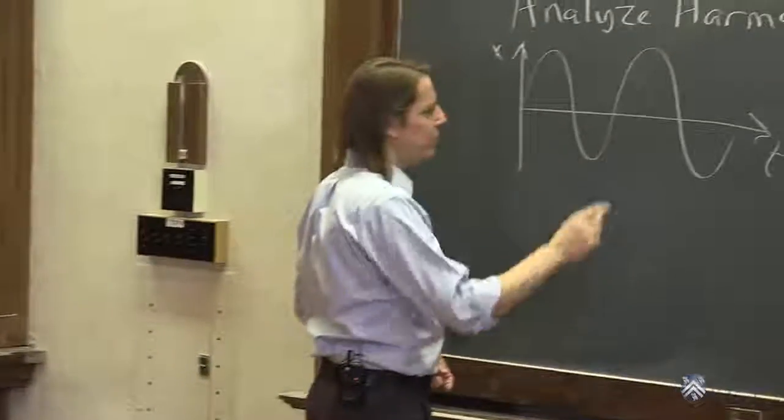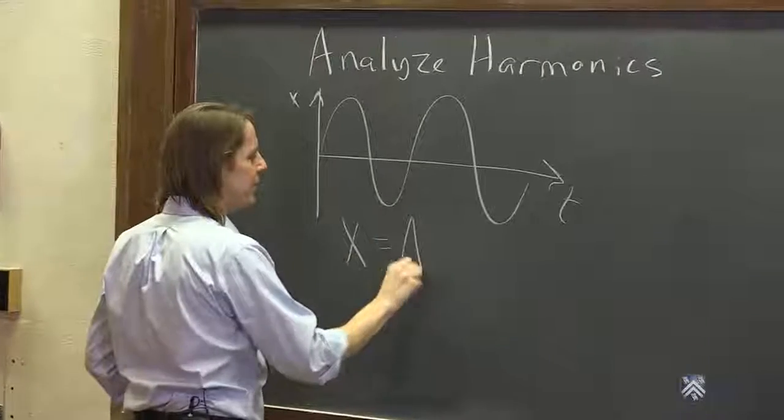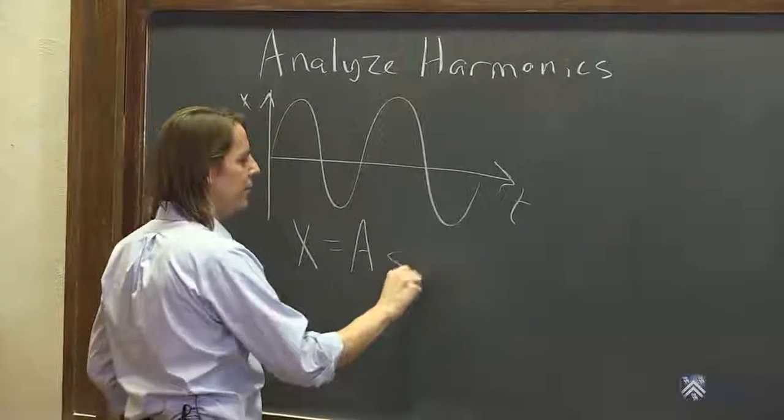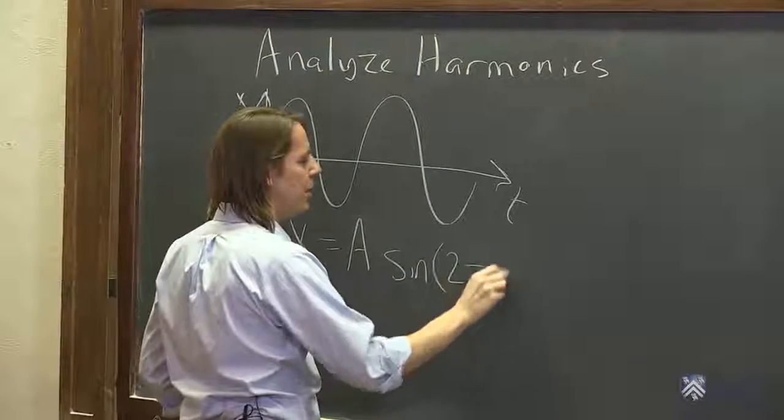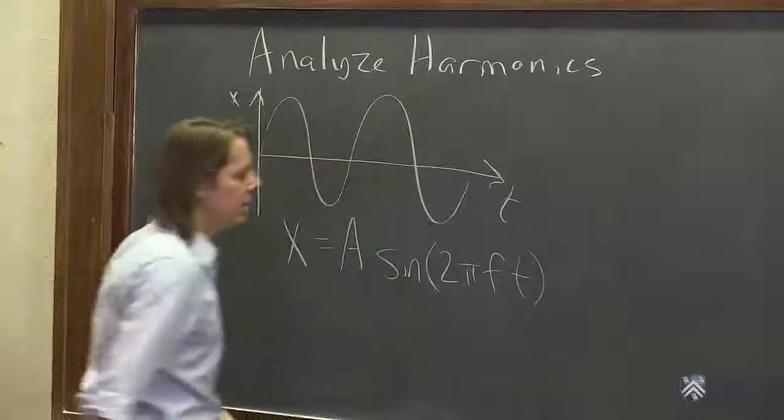The formula we used to describe this motion is x = A sin(2πft), where x is some amplitude A times sine, and then we had 2π times the frequency times time.